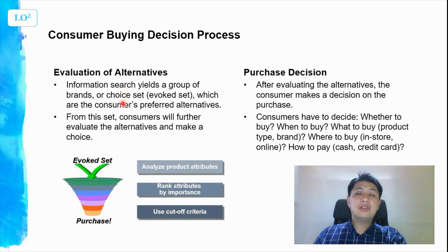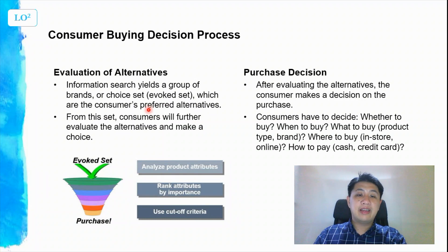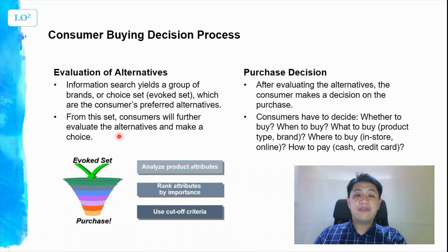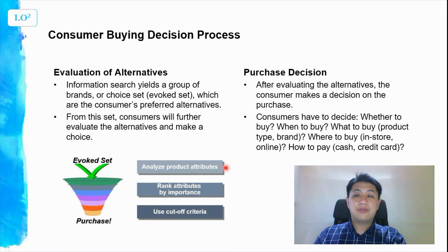With the information gathered, you produce what is known as the evoked set — the consumer's preferred alternatives. For example, when purchasing a laptop, a couple of brands come to mind: perhaps HP, Dell, or Apple. These form your evoked set. From this evoked set, the consumer further evaluates to make a choice by analyzing product attributes such as memory space, RAM, size, and weight.